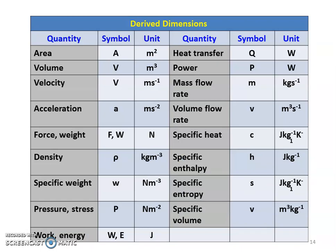All other dimensions are derived from the primary dimensions. The derived dimensions include: area (m²), volume (m³), velocity (m/s), acceleration (m/s²), force (Newton), weight (Newton), density (kg/m³), specific weight (N/m³), pressure (N/m²), work or energy (Joules), heat transfer (Watts), power (Watts), mass flow rate (kg/s), volume flow rate (m³/s), specific heat (J/kg·K), specific enthalpy (J/kg), specific entropy (J/kg·K), and specific volume (m³/kg).